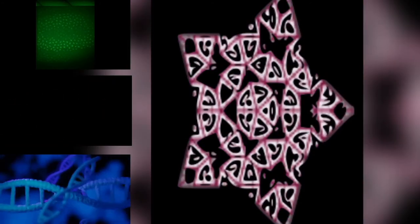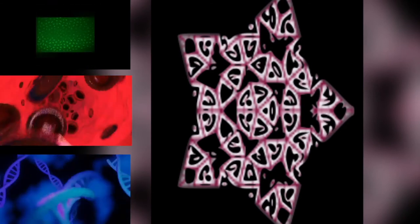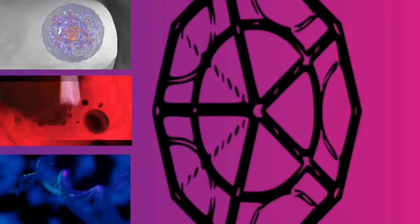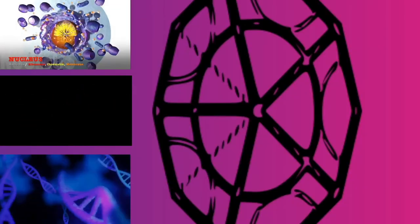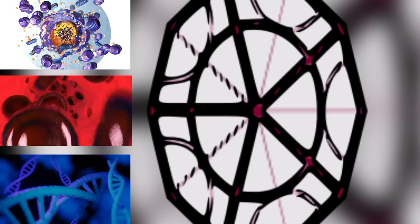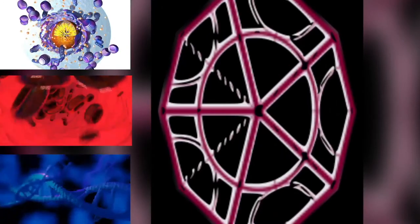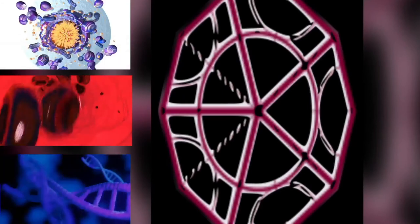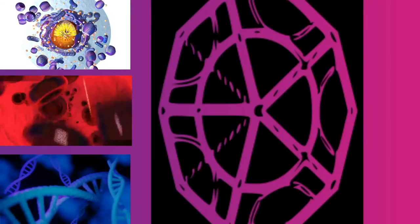A cladogram supporting the eocyte hypothesis, positioning eukaryotes within Archaea, based on phylogenomic analyses of the Asgard archaea. In this scenario, the Asgard group is seen as a sister taxon of the TACK group, which comprises Crenarchaeota, formerly named eocytes, Thaumarchaeota, and others.